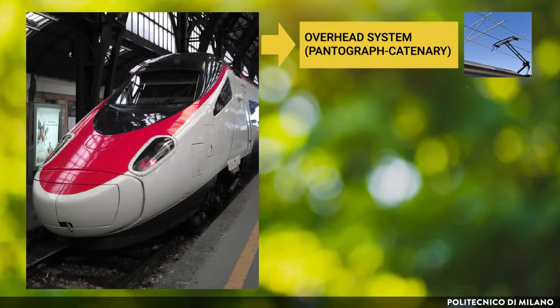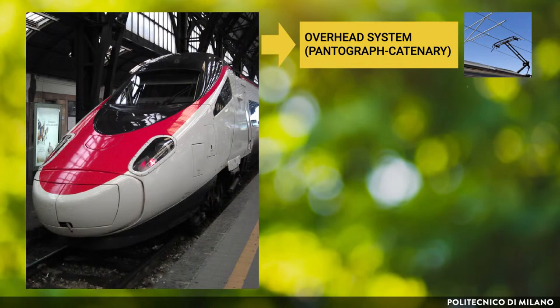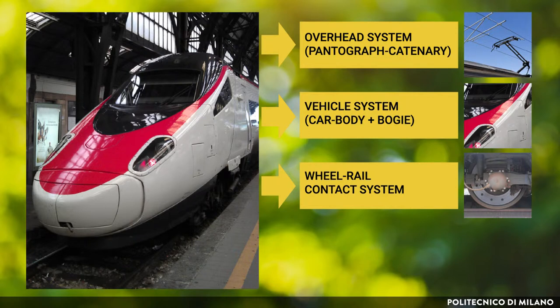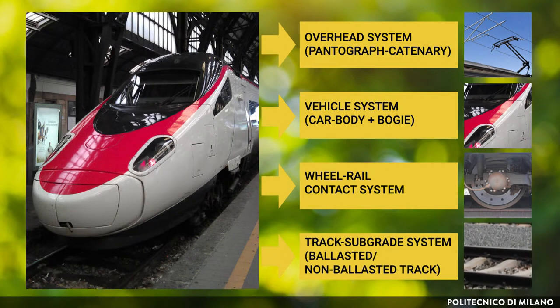The railway system is a complex system. As an example, a modern passenger railway vehicle track system can be briefly described as the following subsystems. The overhead system consists of a pantograph-catenary coupled system, which supplies the power for the traction system of the train. The vehicle system includes car body and bogies with or without the traction system. The wheel-rail contact system is fundamental to railway transport, which is the interface between the train and the track. The track sub-grade system, where the track can be ballasted or non-ballasted.